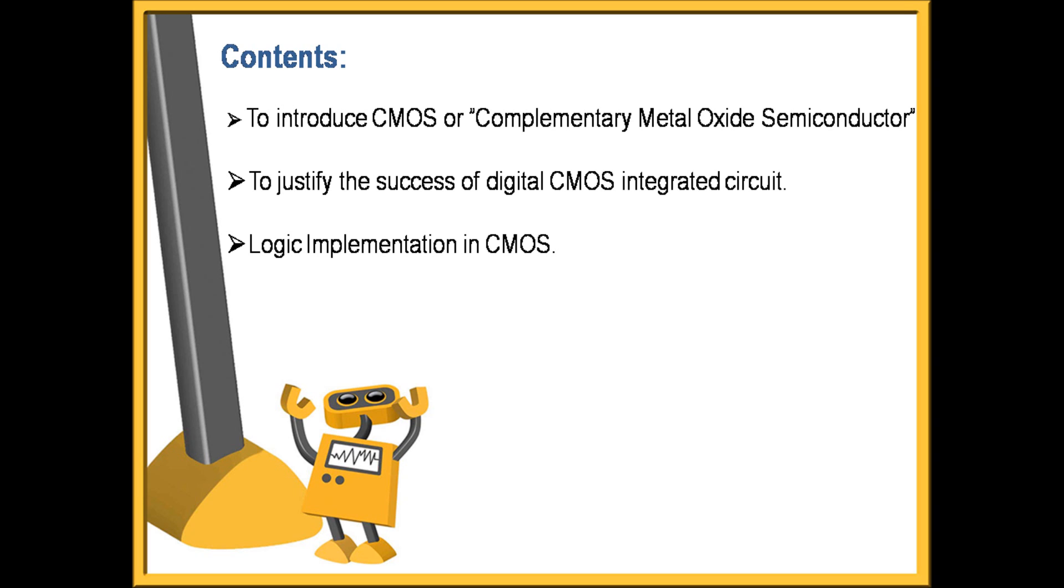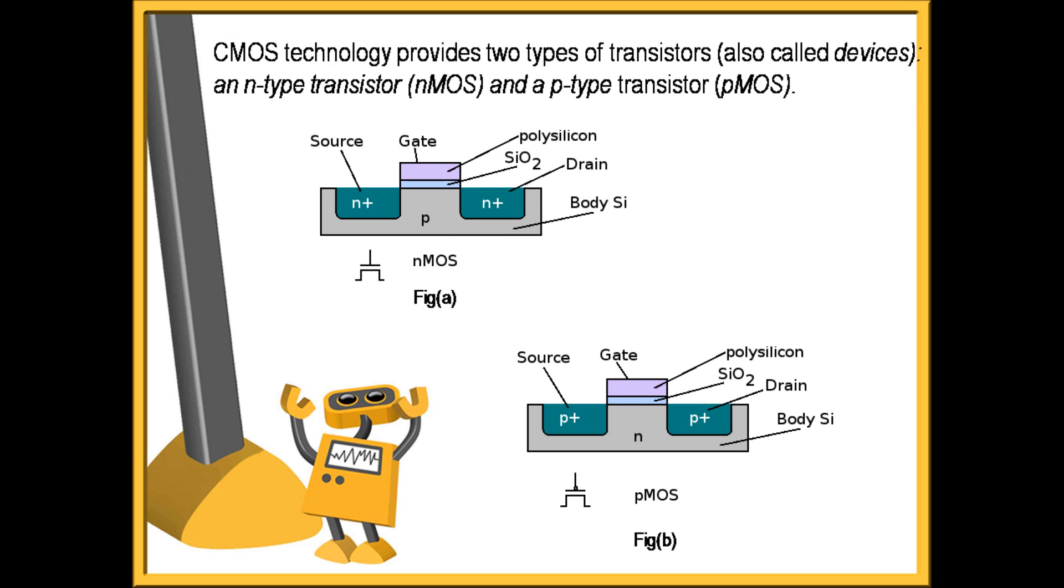Basically, CMOS transistor provides two types of transistors: N-type transistor NMOS and P-type transistor PMOS. It is called complementary because electrons and holes both carry current depending upon the doping done by N-type and P-type impurities. A metal gate made of polysilicon is used in the transistor body and silicon dioxide is the material between gate and channel. Silicon semiconductor material is used mainly for fabrication of CMOS transistors. This is why the name Complementary Metal Oxide Semiconductor transistor is given.